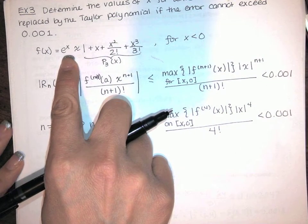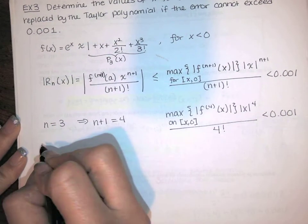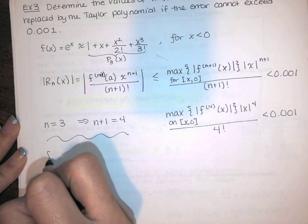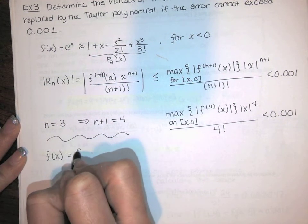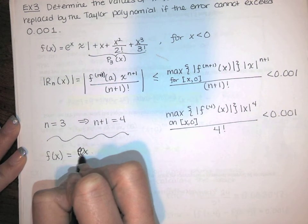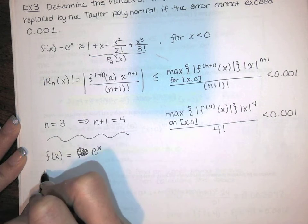The only unknown in this equation is the maximum value of this function on this interval. We're told that our function is e to the x. It's actually very fortunate because that means our calculations are going to be brief.